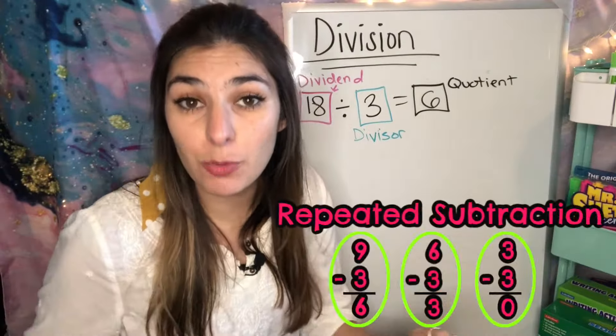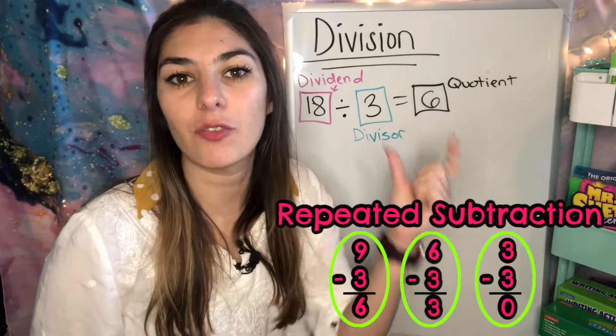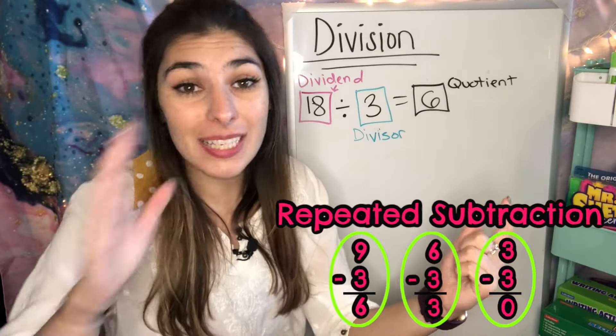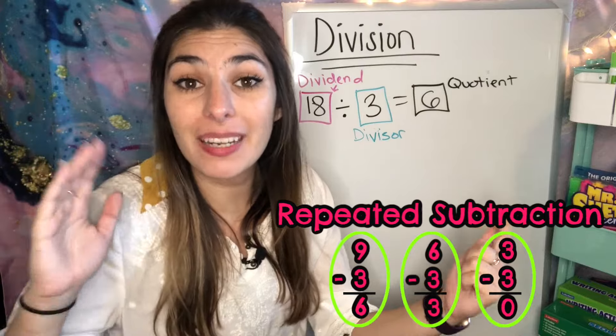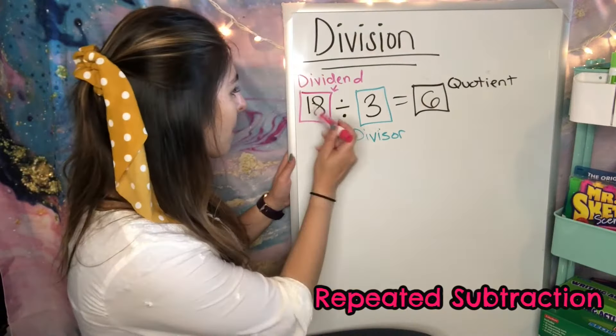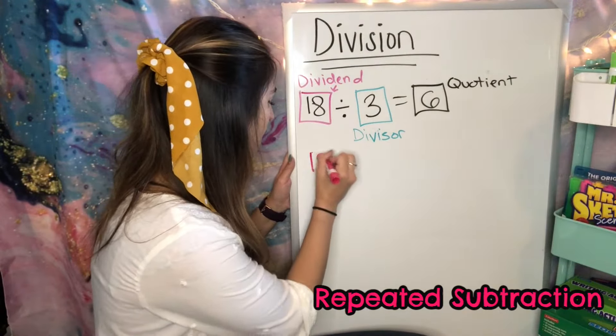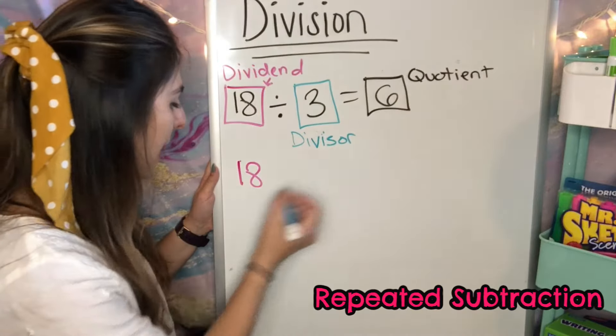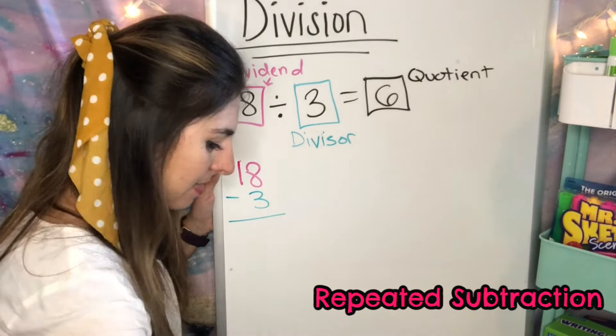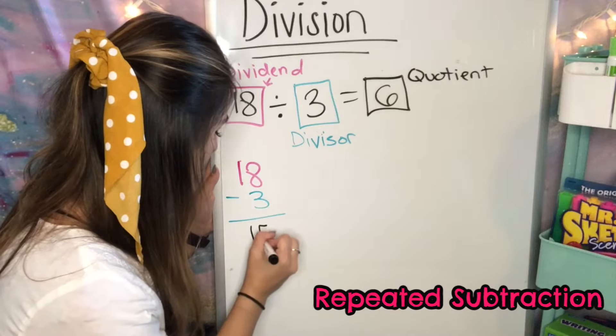So our next strategy is repeated subtraction. Much like in multiplication where we did repeated addition, division is the opposite. So we're going to do repeated subtraction. So I'm going to start with my dividend, which is 18. I'm going to subtract the divisor, take away 3, and that equals 15.